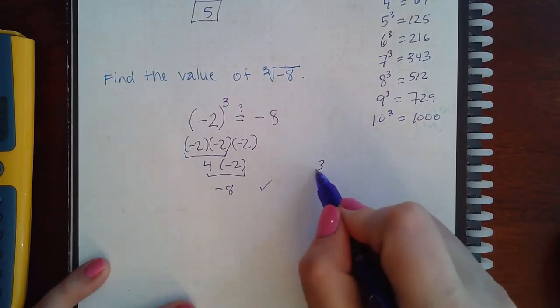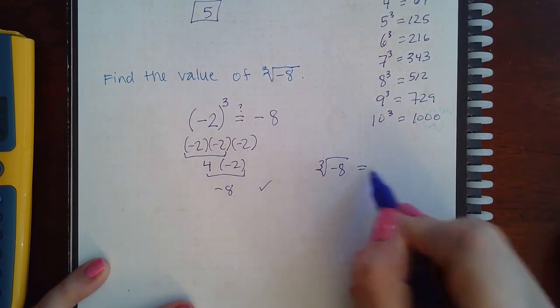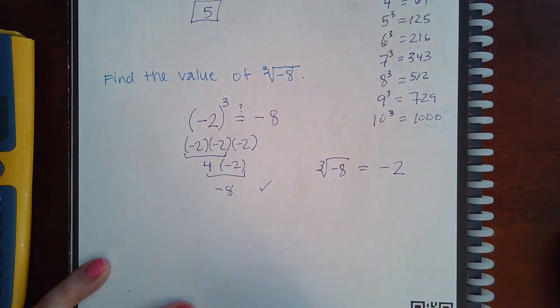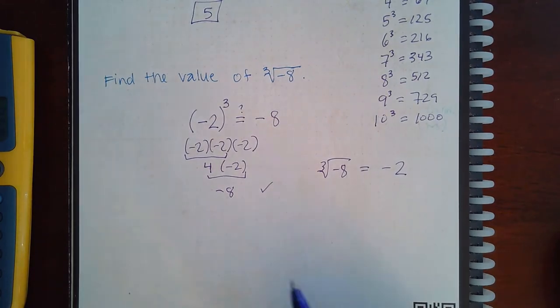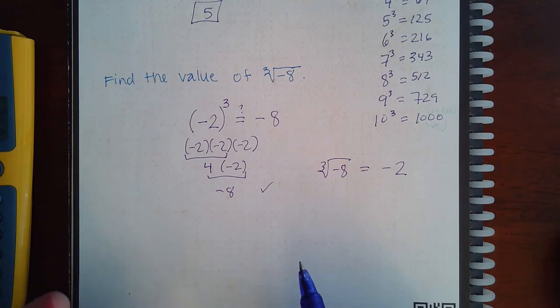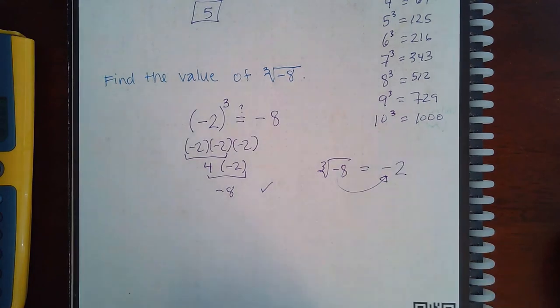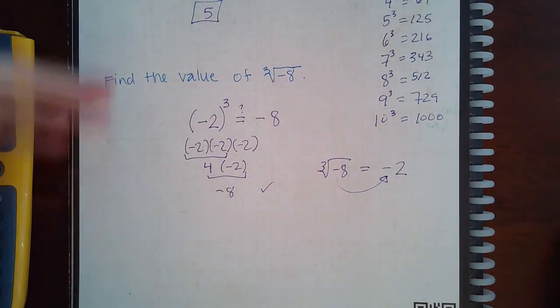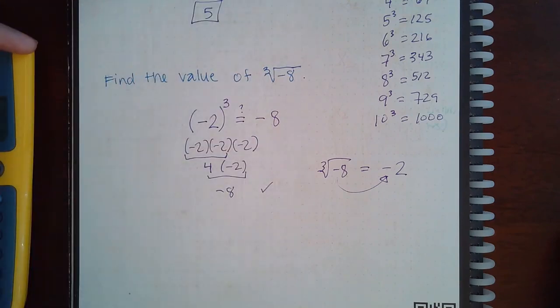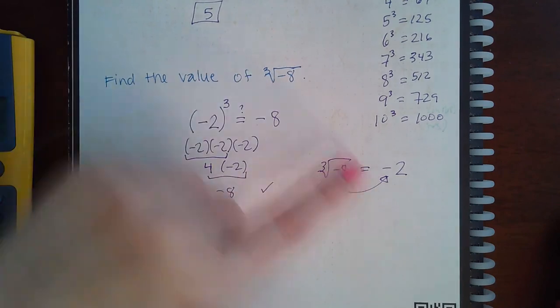So, then that means that the cube root of negative 8 is negative 2. Big thing to remember: the square root of a negative is not real, it's not a real number. But the cube root of a negative will give you a negative answer. So you do the number just like before, figure out what number cubed gives you that number inside. And then the cube root of a negative is going to be a negative.